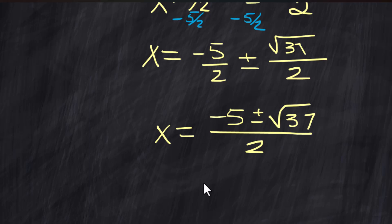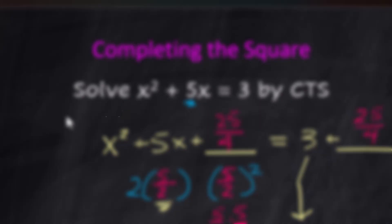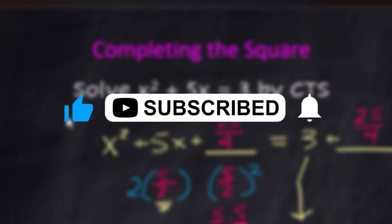If you're familiar with the quadratic formula, when you have an odd coefficient on x and you don't have to complete the square, the quadratic formula is probably the simpler approach. If you'd like to see how that works, click the link above — I'll also put a link at the end of this video. If you got some value out of this, it would help me out if you'd like and subscribe so this channel can grow. Thank you.